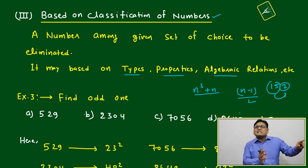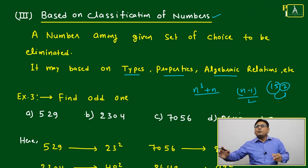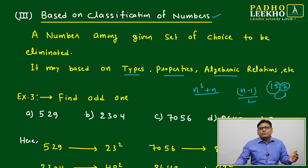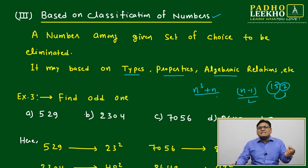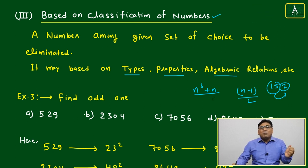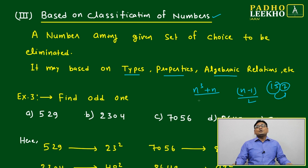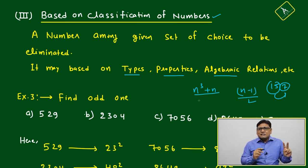You can't say one number is following n minus 1 by 2, another number is following n cube plus 3. We can establish one relation, all numbers are following certain relation and one will be out. No. If one number is followed the relation n minus 1 by 2, all four numbers out of five must follow same relation. Then you have two challenges there: establishing the relationship.